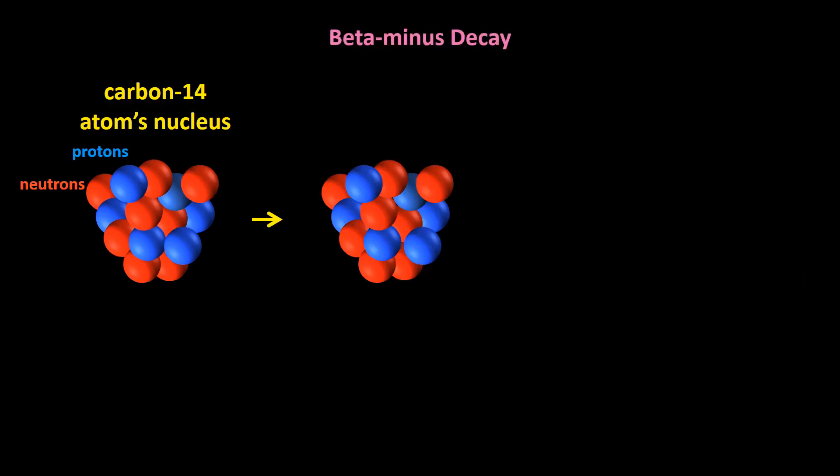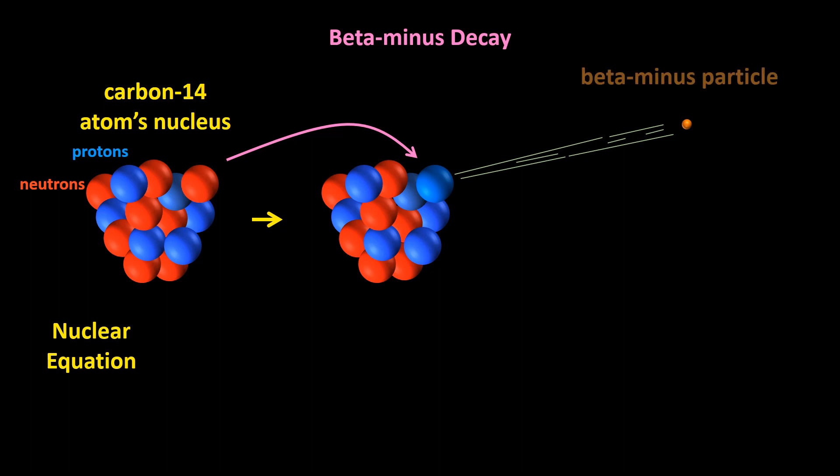Let's watch the beta minus decay process again, and then I'll show you how to write the nuclear equation for this decay. One of the neutrons changes into a proton and an electron, and the electron, which we refer to as a beta minus particle, flies off at an enormous speed. We've seen that the carbon-14 nucleus can be written as 14-6-C. Beta minus particles are given the Greek symbol beta minus—the minus sign is a superscript—or E minus, E for electron.